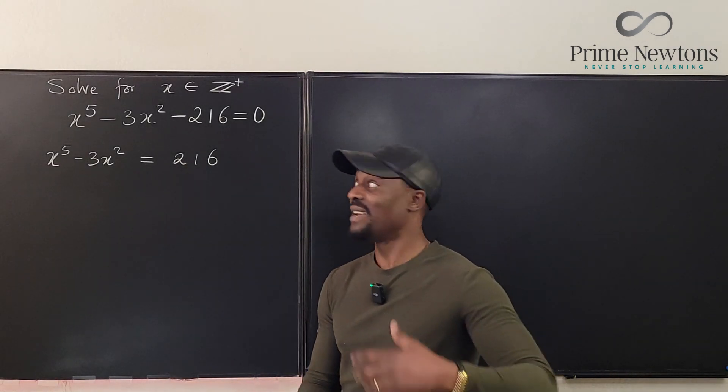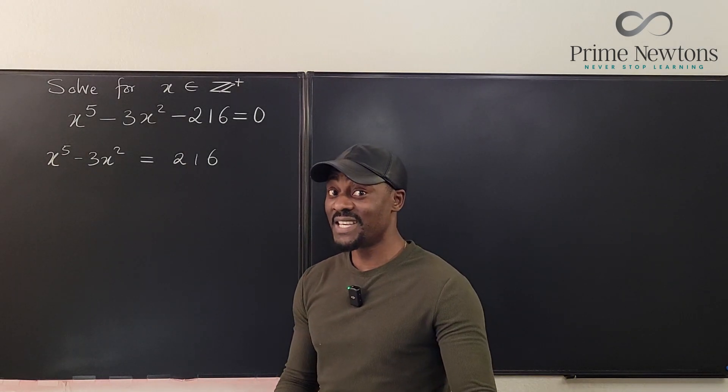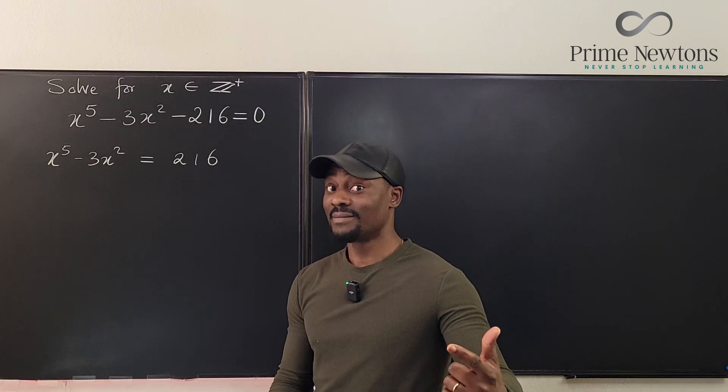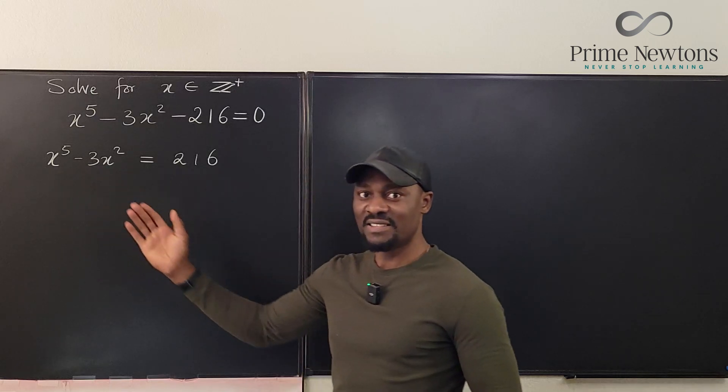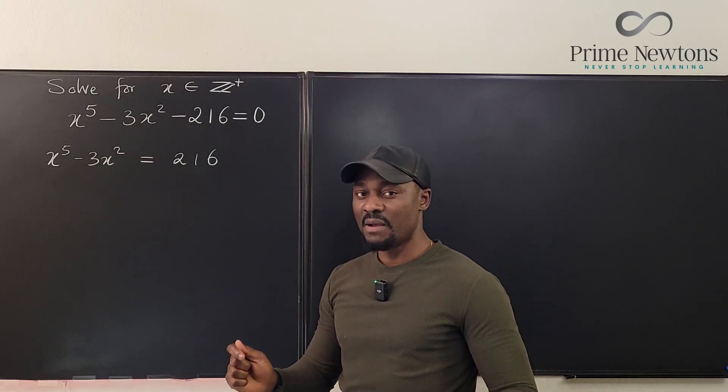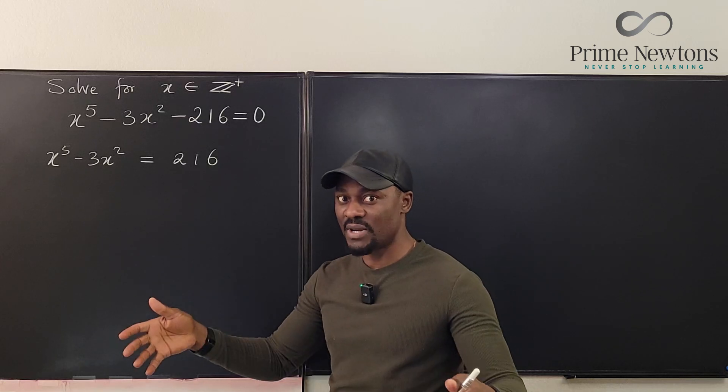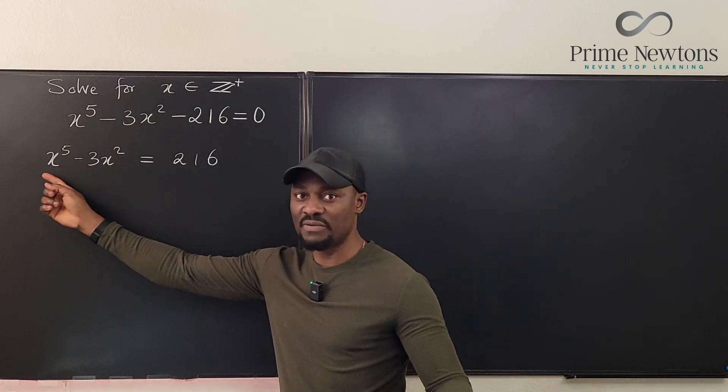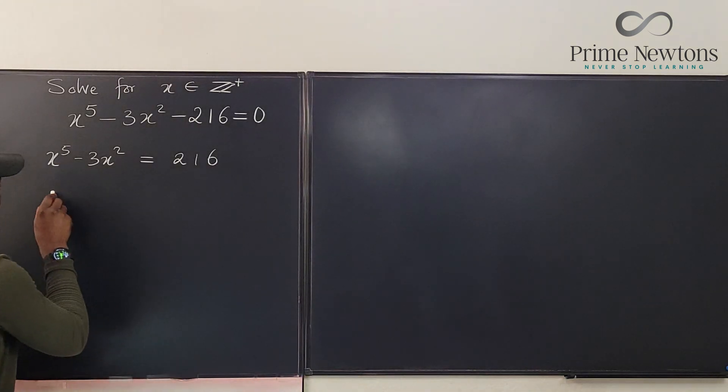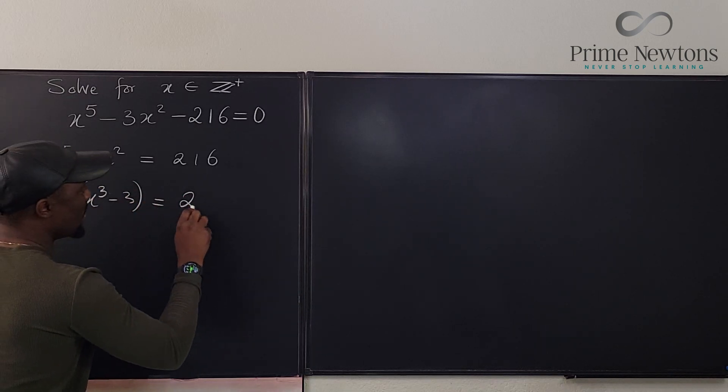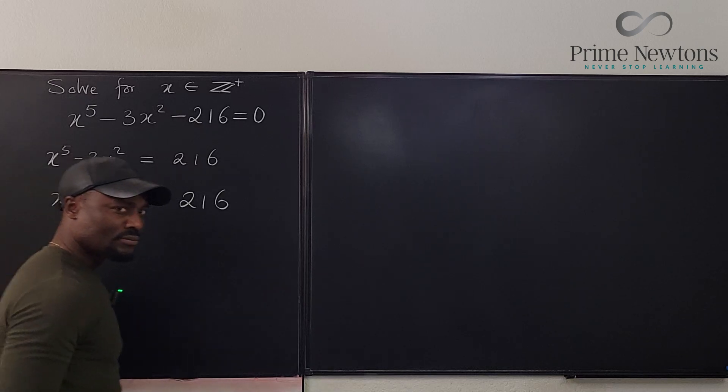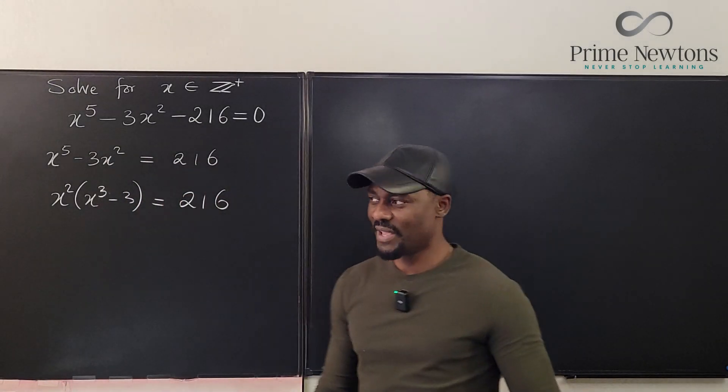Now the number 216 is a familiar number to me because 216 is 6 to the third - six times six times six is 216. But I can't see anything like 6 to the third on the left-hand side. But one thing I can do to the left is factor it. I see there's a common factor of x squared, so let's see what we have if I take out x squared. What I have is x squared times (x cubed minus 3) will be equal to 216.